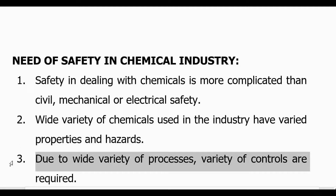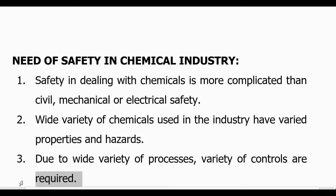Now, in the third point: we have a wide variety of chemicals, but the same chemical is sometimes used for different purposes — for making different things. So different processes or different reactions are carried out using the same chemical. Because of this, you may end up with different conditions and you have to have different types of controls on these chemicals. There is a huge variability in dealing with chemicals, so you have a variety of chemicals, a variety of processes, and you have to control them in a variety of ways.